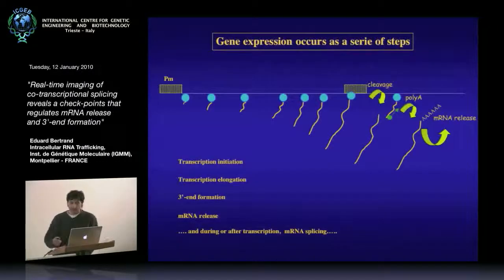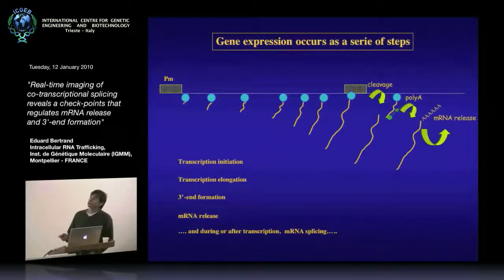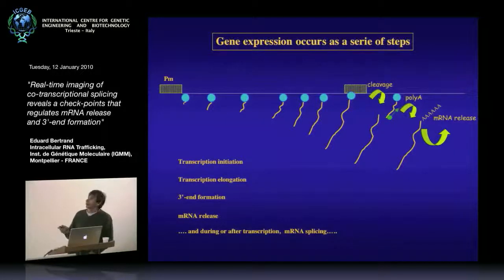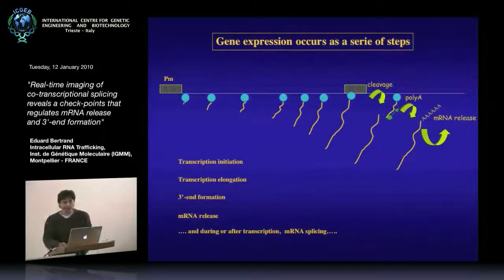As you all know, gene expression requires a series of successive steps. When you have a gene, you need polymerases that come on the promoter, initiate transcription, then transcribe all the genes, process the RNA, and after the RNA is processed at the 3-prime end, you need to splice it, export it, and finally translate it in the cytoplasm.